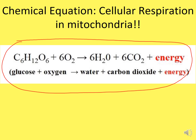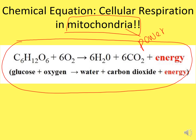Cellular respiration takes place in the mitochondria, because the mitochondria is the powerhouse of the cell, which gives us all of our energy. So now we have this chemical formula, and basically it's photosynthesis read backwards.